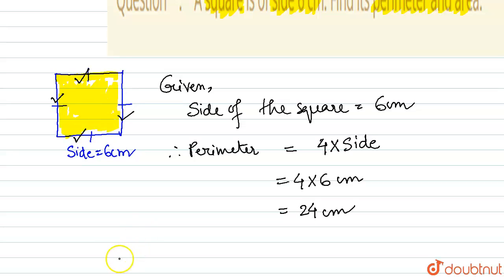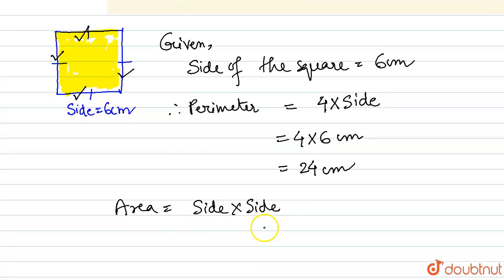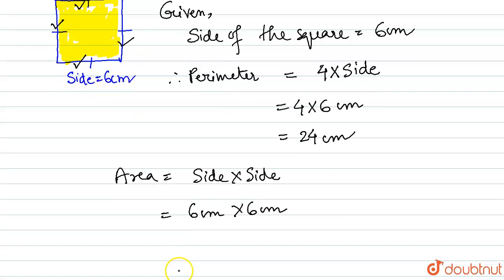So the formula of area of the square is side into side. We are given in the question side is 6 centimeter into 6 centimeter. That means 6 into 6 is 36 centimeter into centimeter is centimeter square.